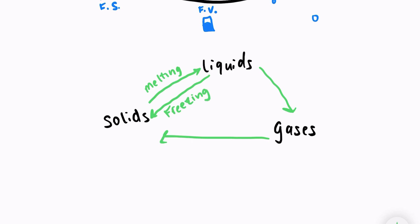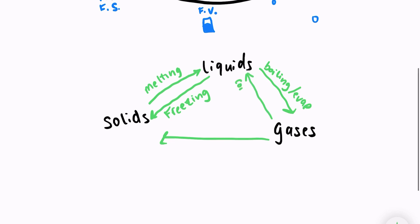Going from a liquid into a gas is boiling or evaporation. Changing from a gas back into a liquid is known as condensing.